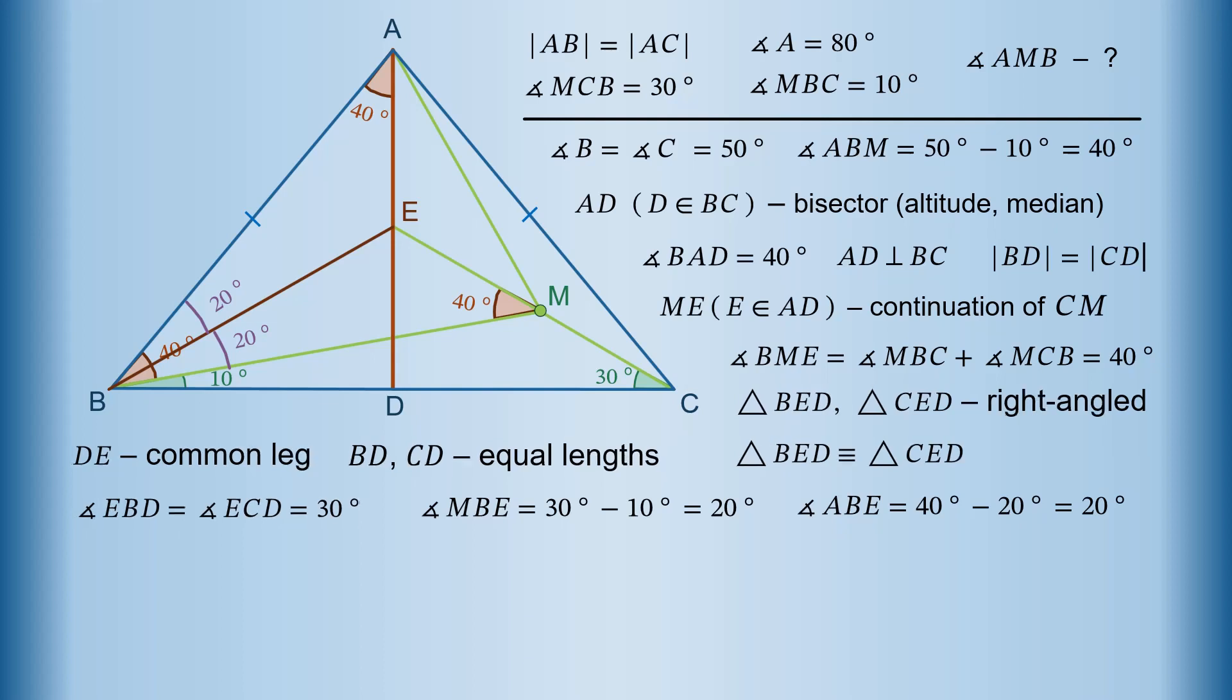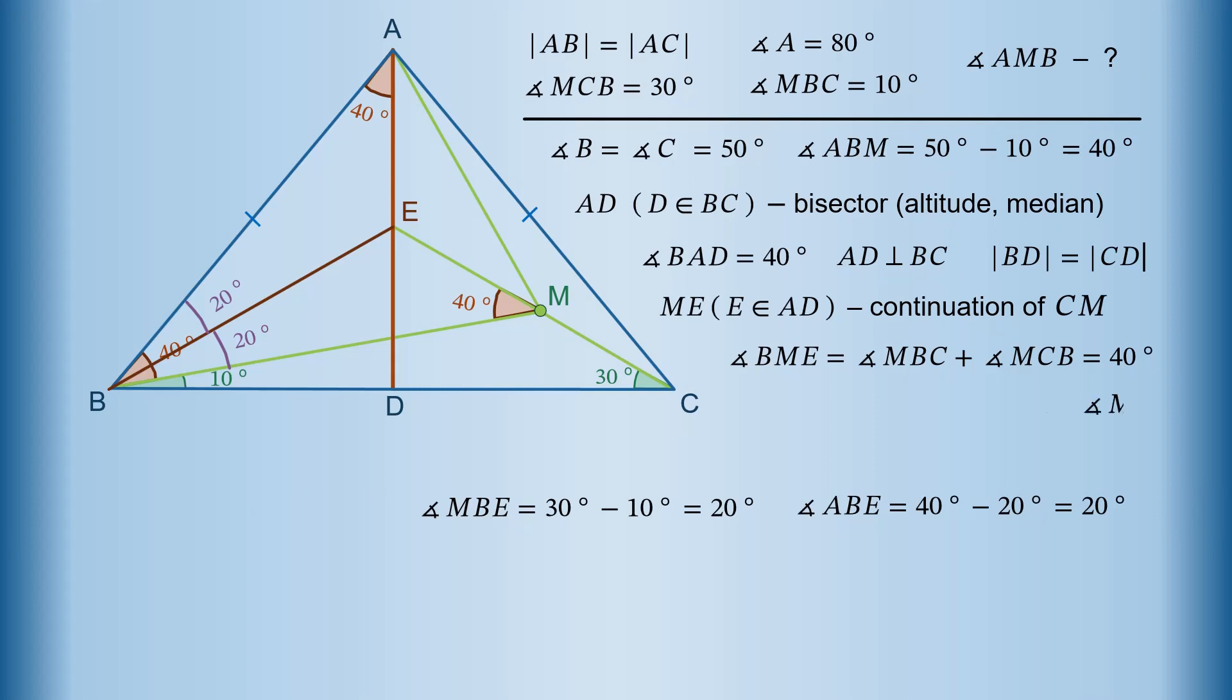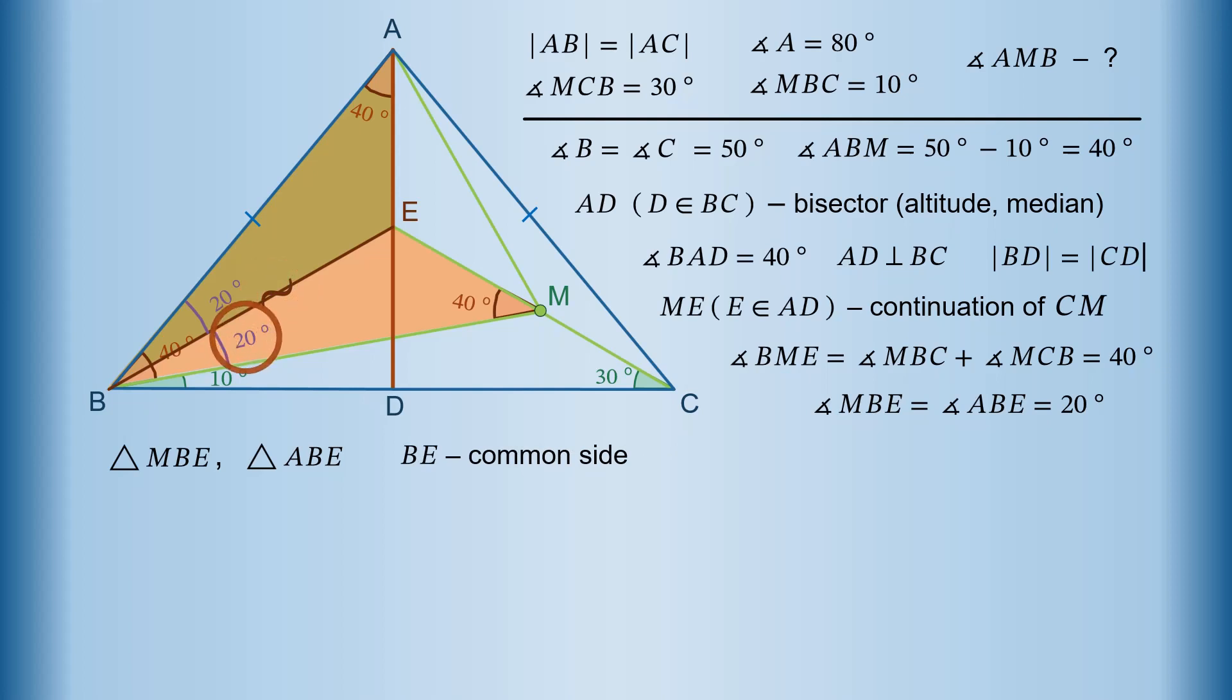Let's wipe out few lines and merge the last two equalities into a single one. Angle MBE equals angle ABE equals 20 degrees. Now consider another pair of triangles: triangle MBE and triangle ABE. They have common side BE and two pairs of equal angles. Angle MBE equals angle ABE equals 20 degrees, and angle BME equals angle BAE equals 40 degrees. Since the sum of inner angles in each triangle is 180 degrees, the remaining angles MEB and AEB are also equal to each other. Now we can apply angle side angle rule and say that triangle MBE is congruent to triangle ABE.